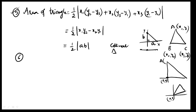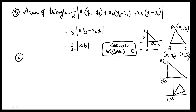Area of triangle — when area equals zero, that is the collinear condition. If the answer is equal to zero, the points are collinear. Missing term problems also use this: area equals zero. The next important formula is slope.